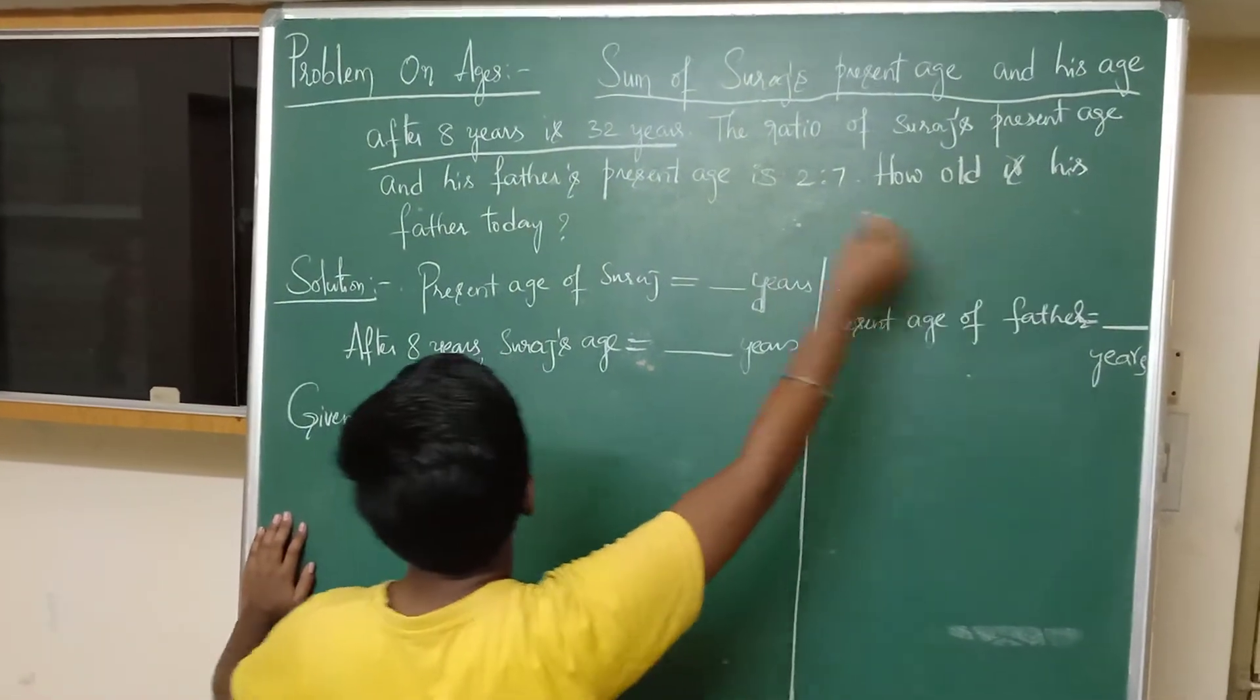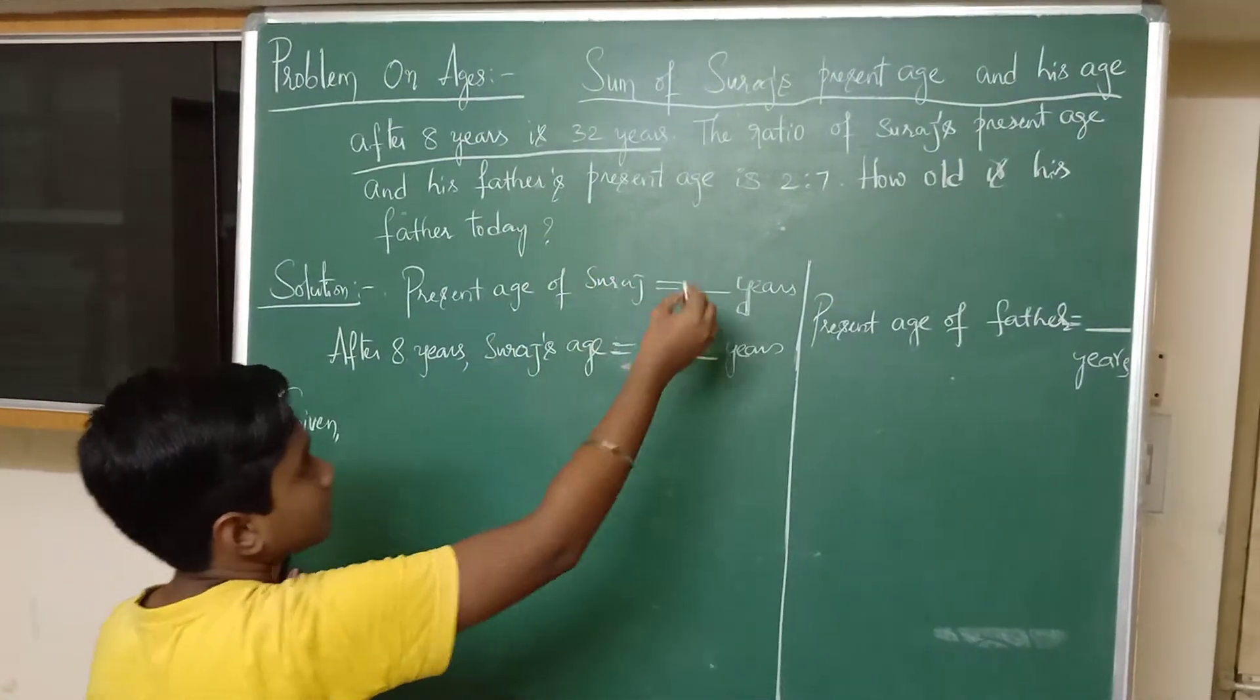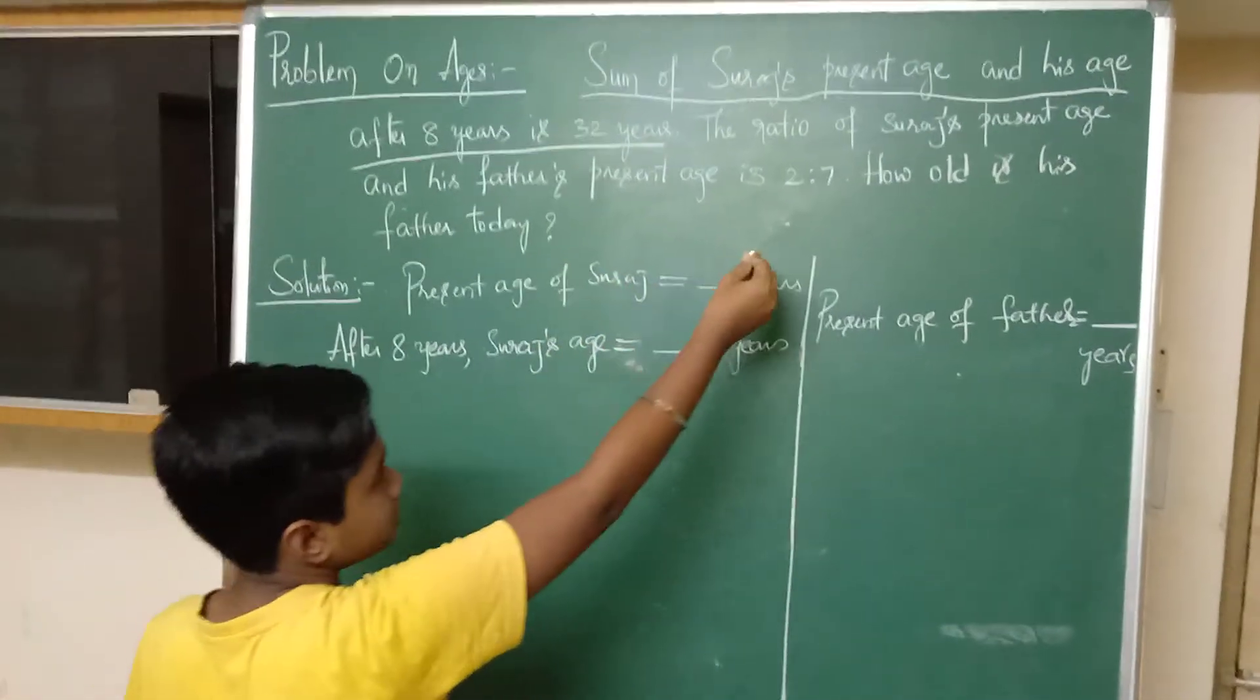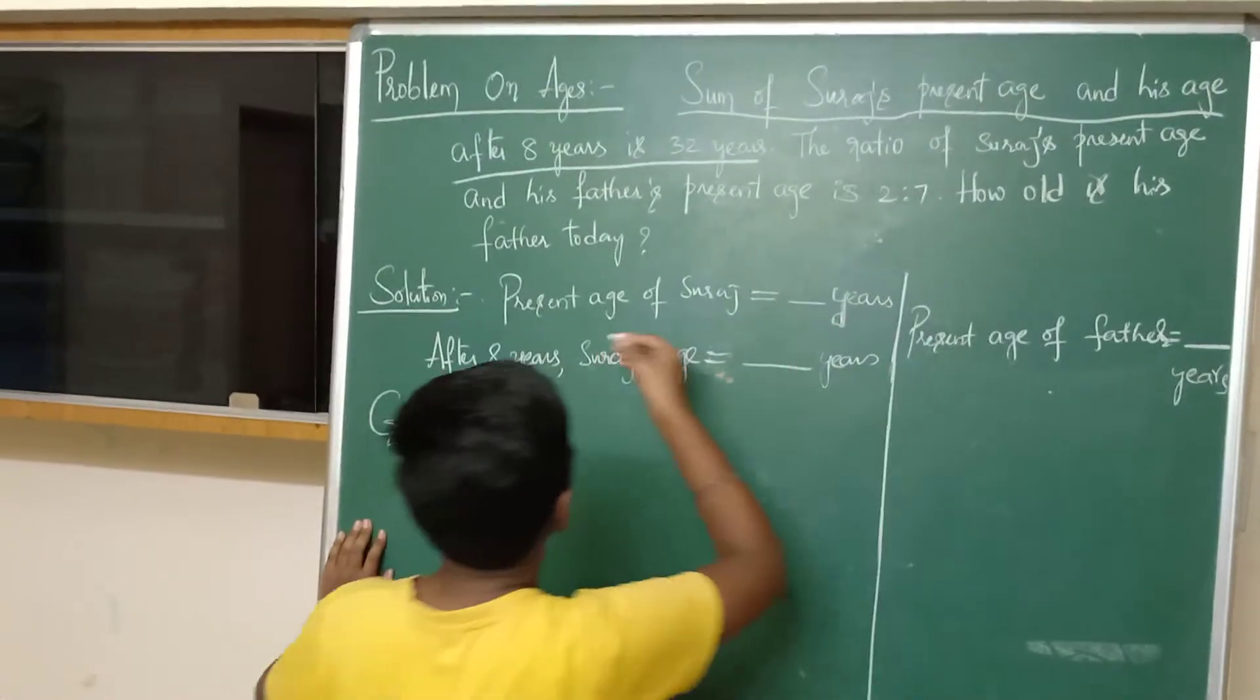Sum of Suresh's present age and his age after 8 years is 32 years. The ratio of Suresh's present age and his father's present age is 2 is to 7. How old is his father today?